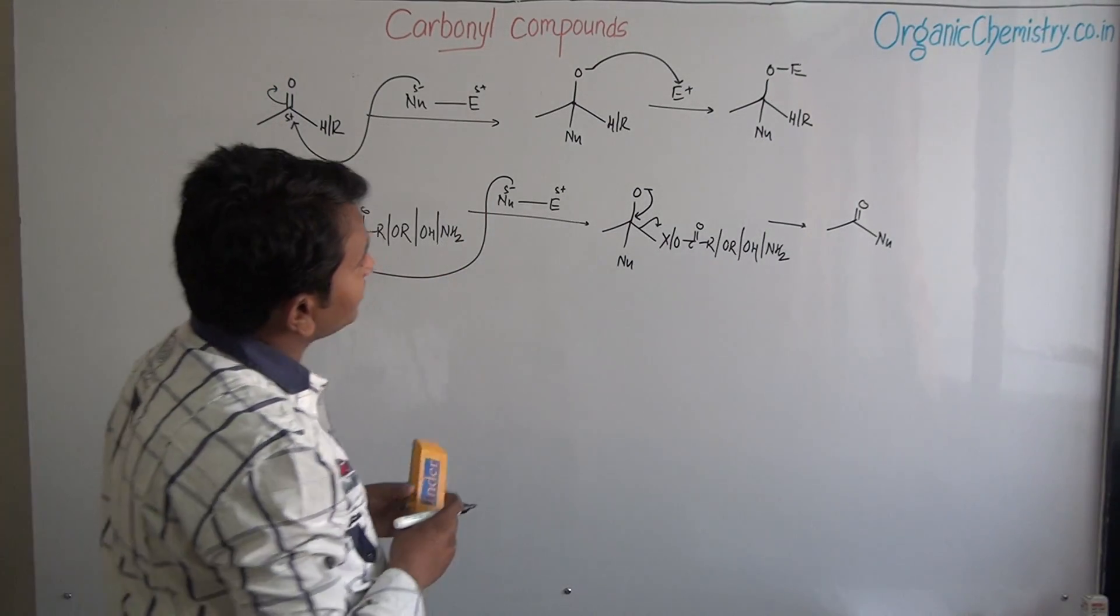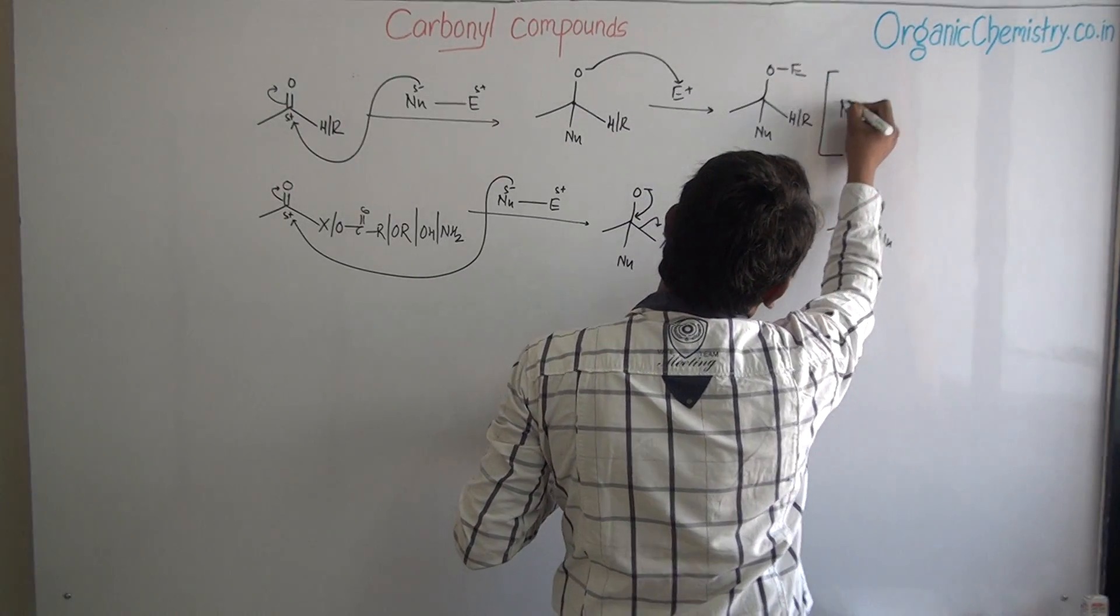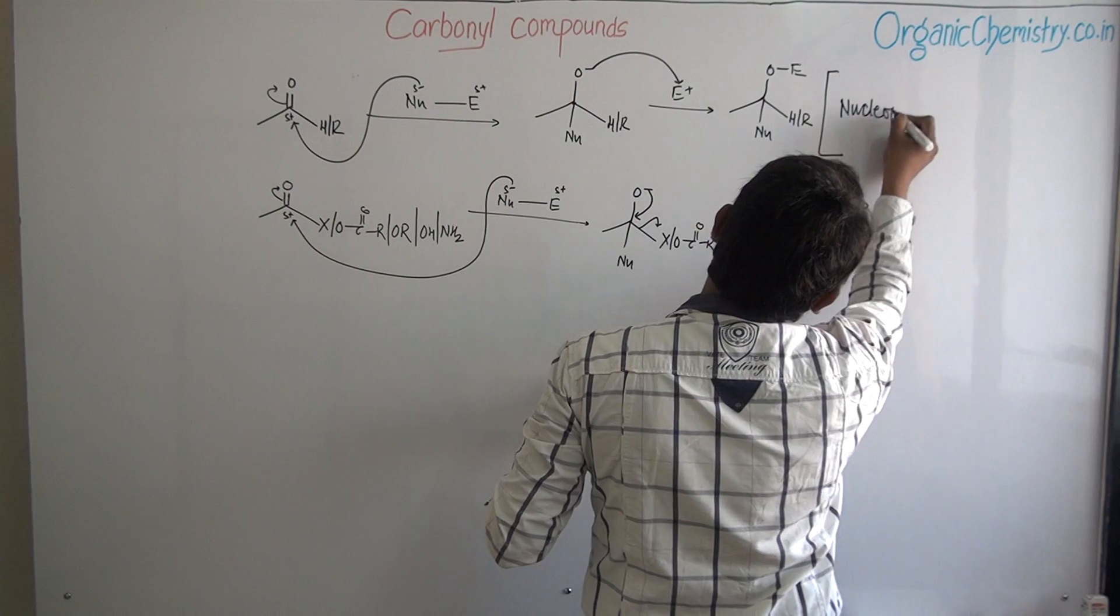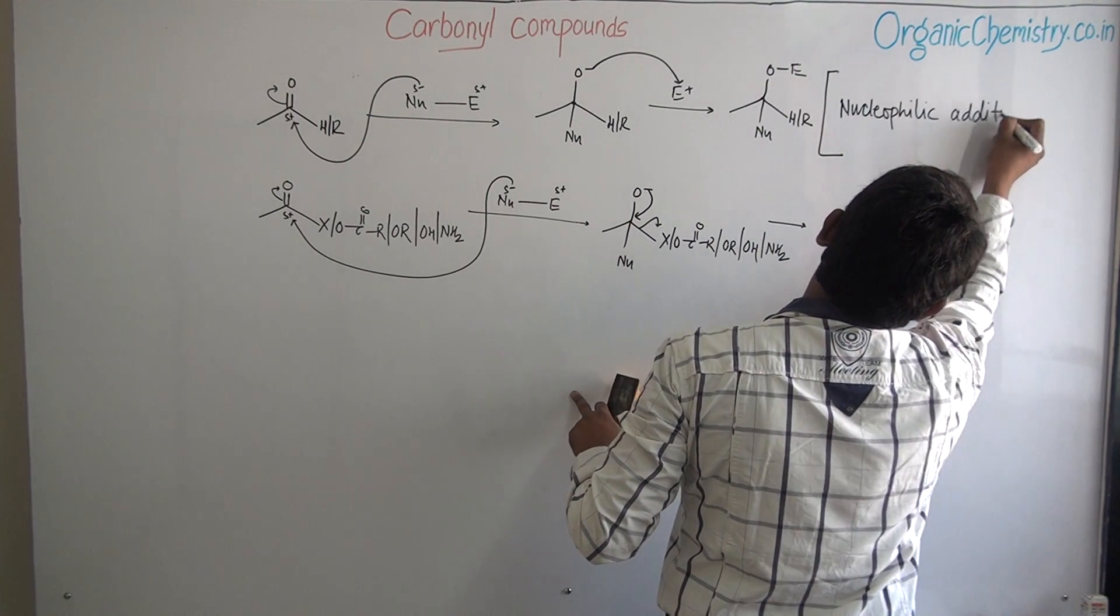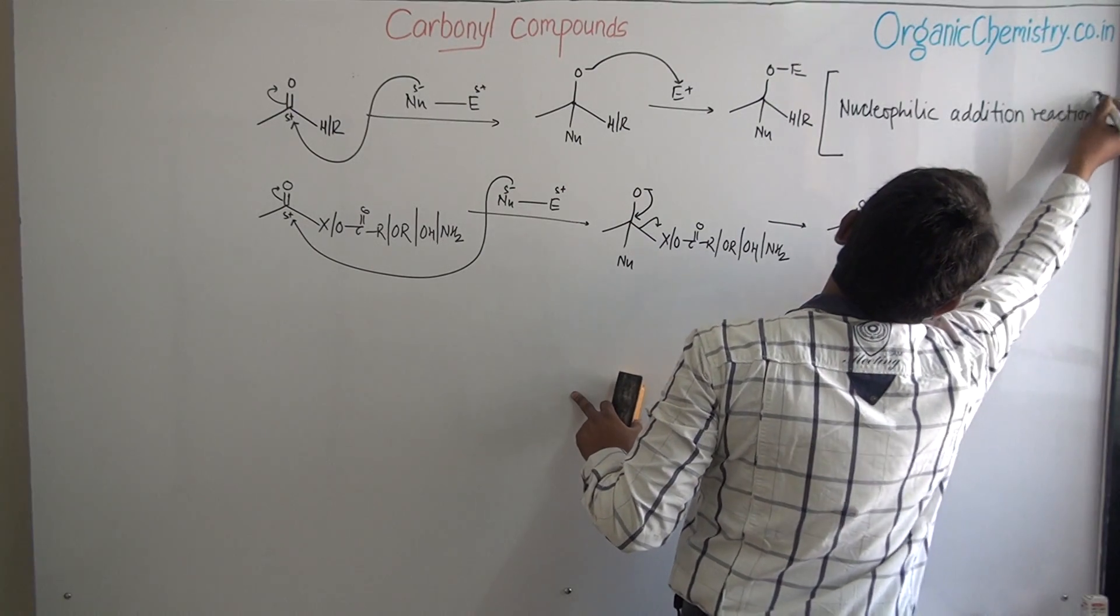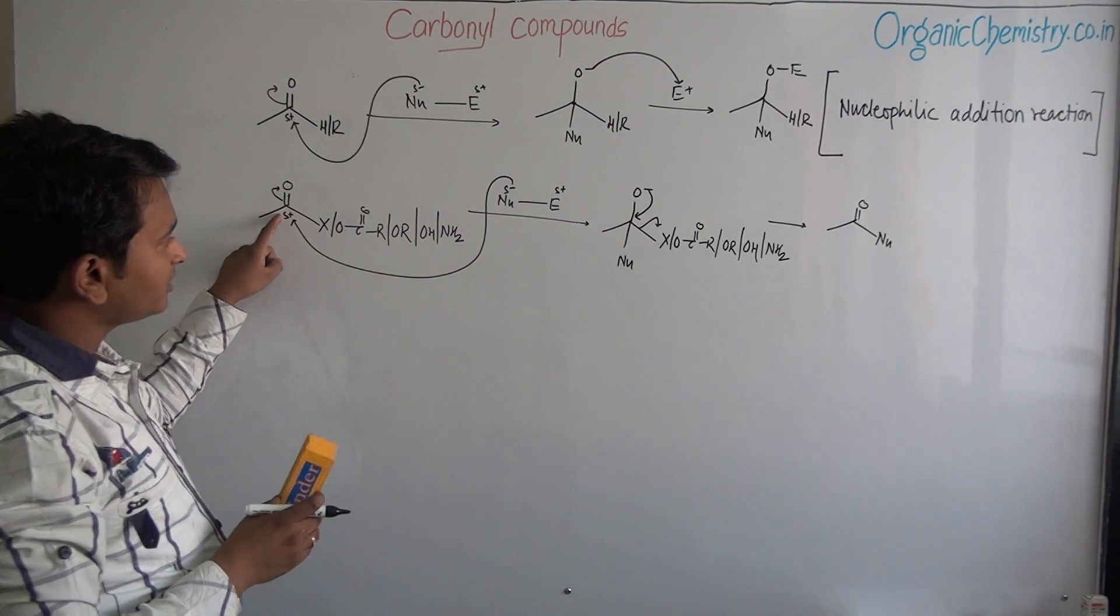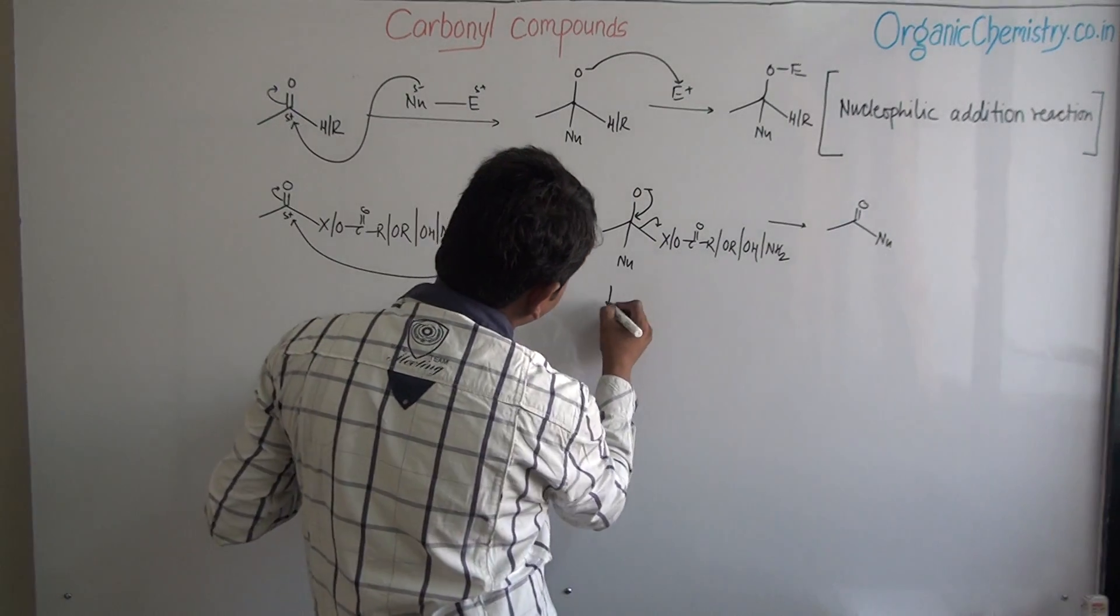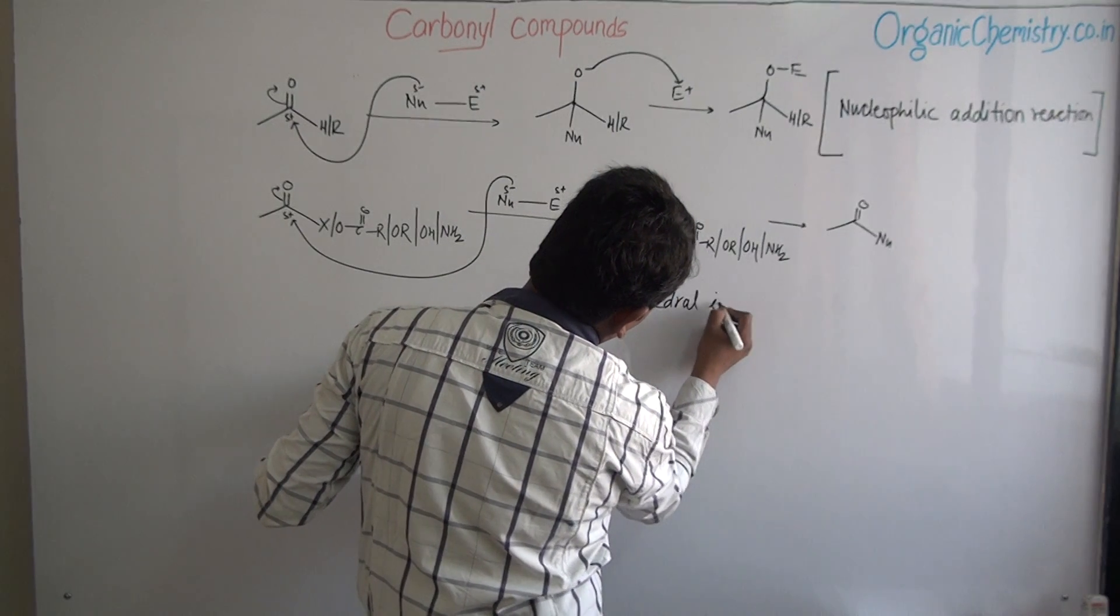This is the example of nucleophilic addition reaction. While in this case, nucleophile attacks on this partial positive carbon and forms first tetrahedral intermediate.